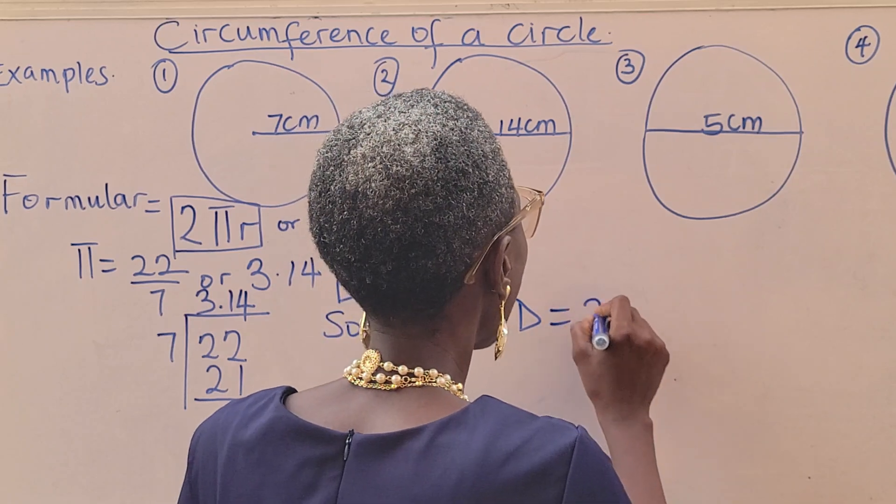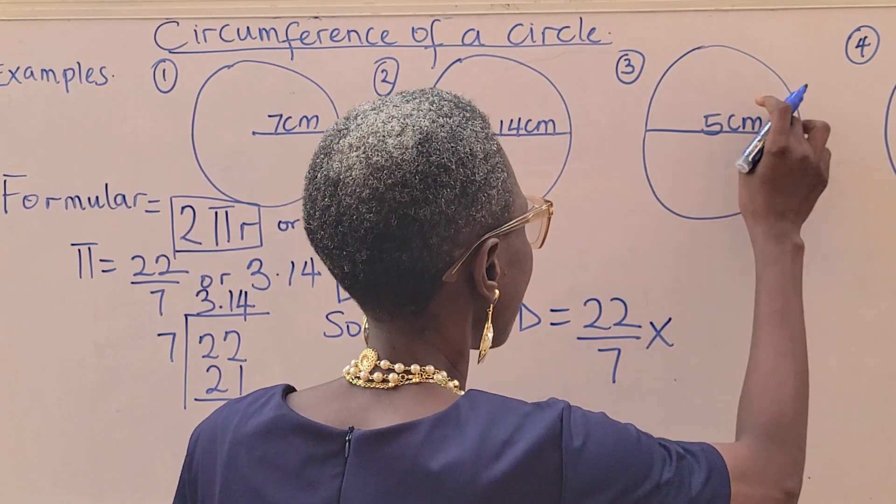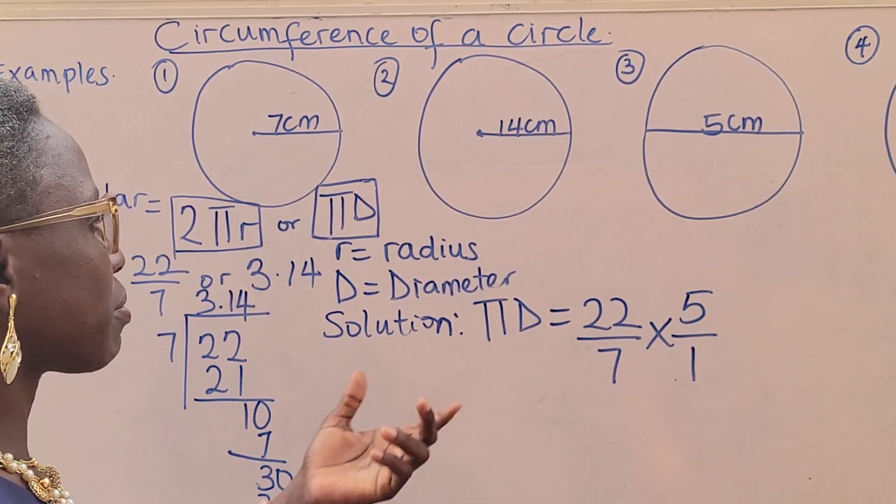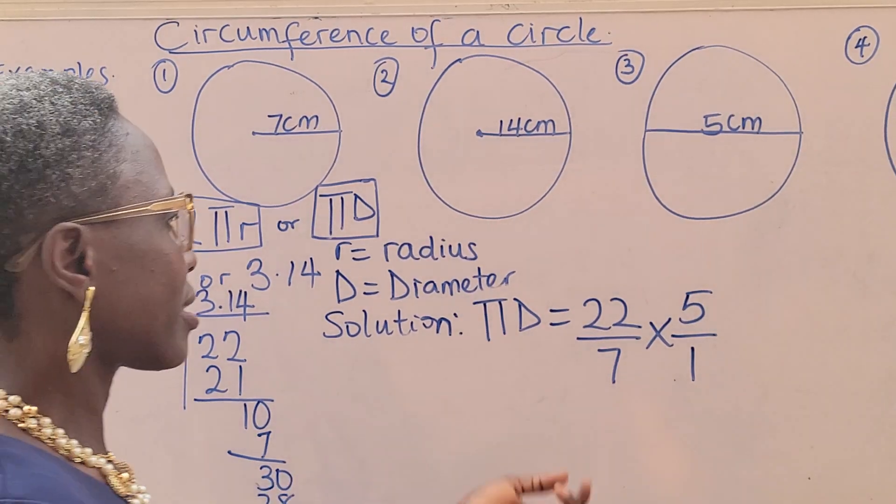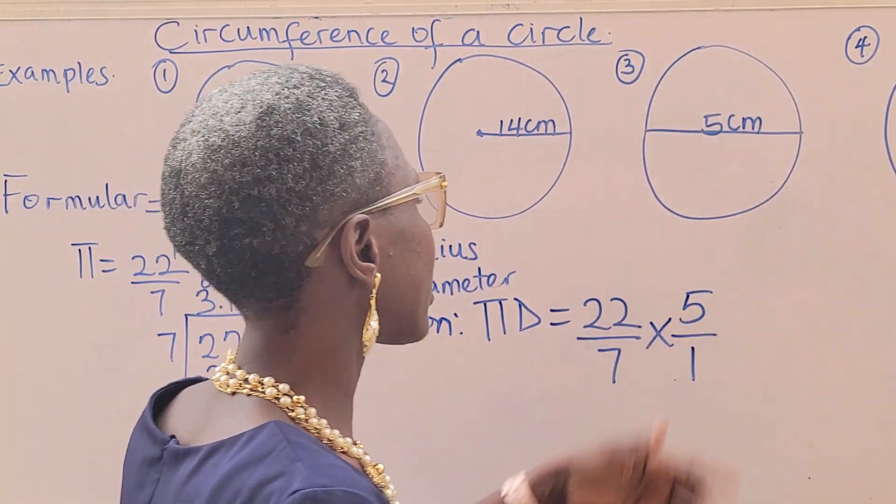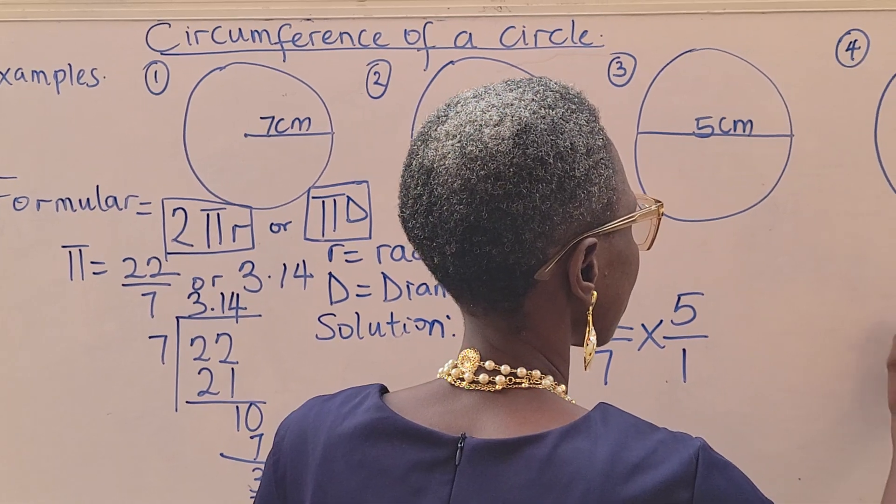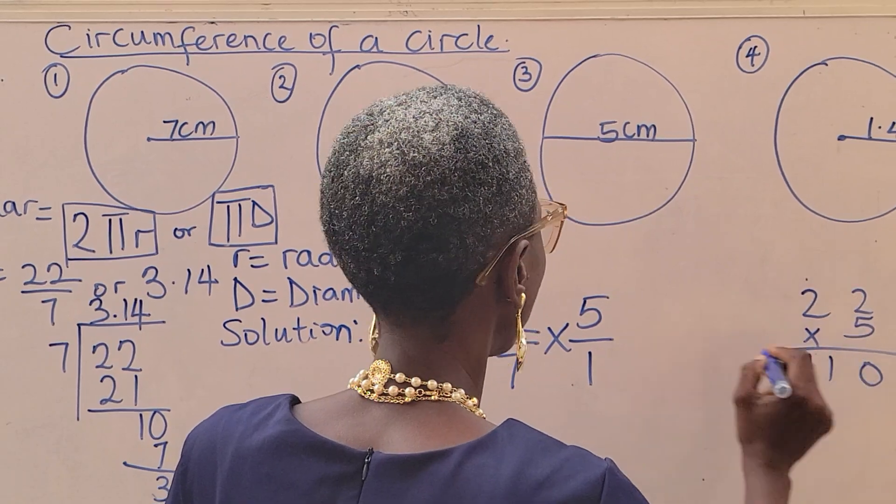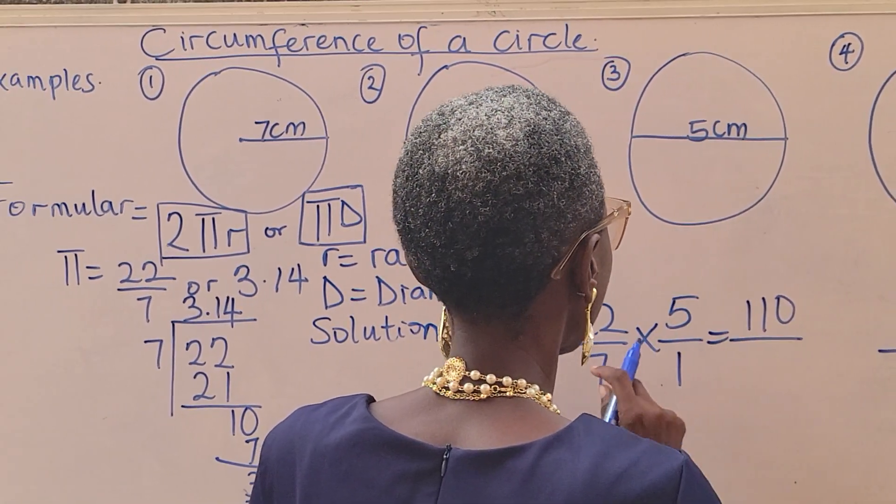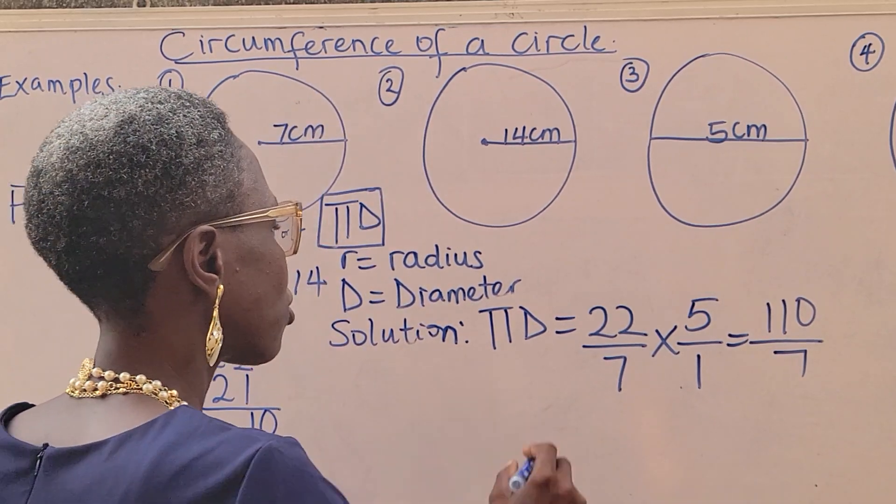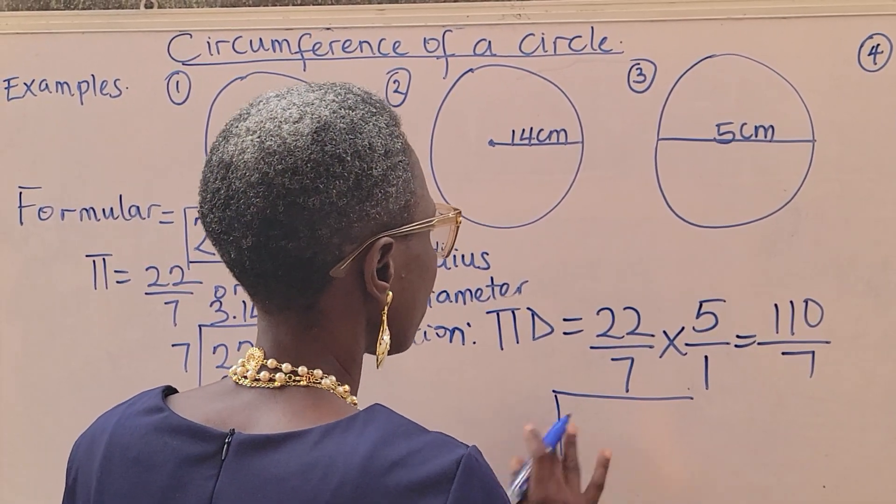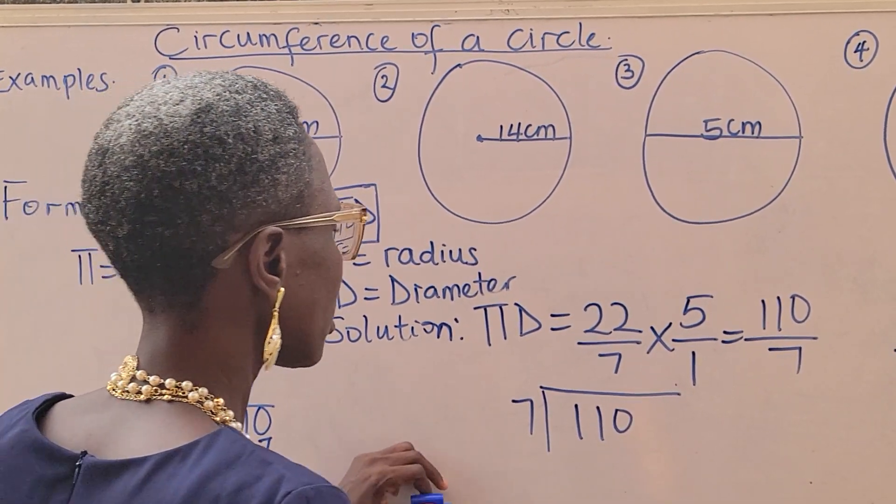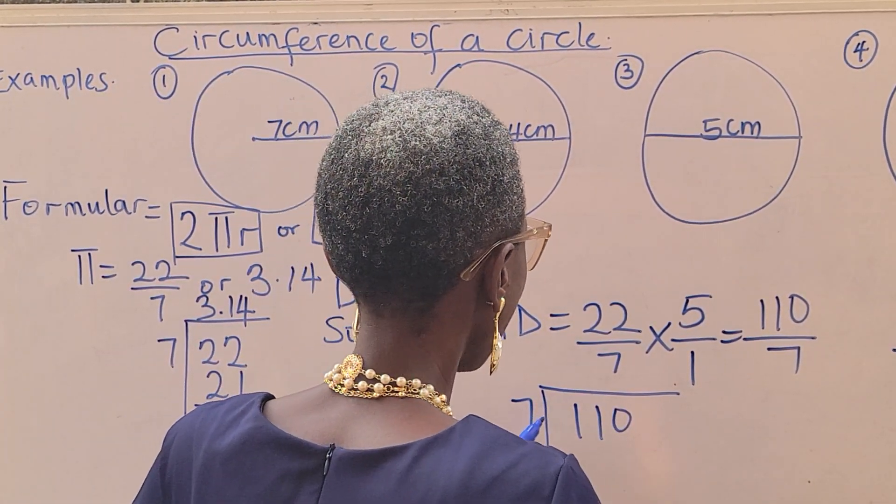πd means π times the diameter you are given. You can watch my video on multiplication of fractions, but this is a simple way to do it. 22 times 5, you can do your workings by the side. This is 10. This is 10 plus 1, 11. So we have 110 over 7 times 1, 7. Now do your long division. It's going to be 110 divided by 7. 11 divided by 7, that's 1.